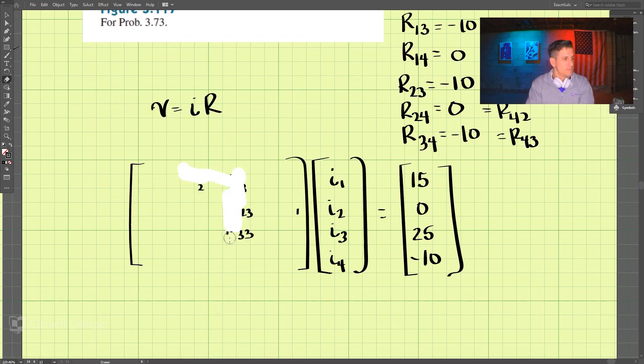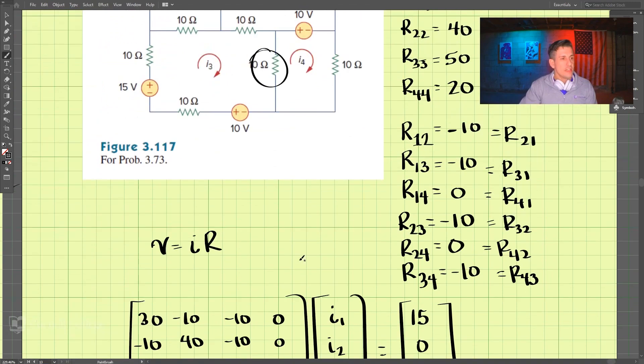Okay, so we can fill this out. So we have 30, negative 10, negative 10, 0; negative 10, 40, negative 10, 0; negative 10, negative 10, 50, negative 10; and then 0, 0, negative 10, 20. So these are just these values here and we put those into this equation here.